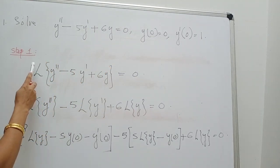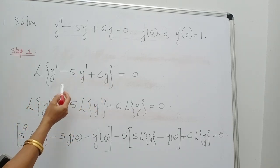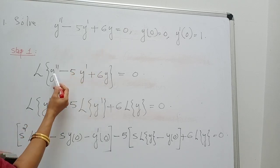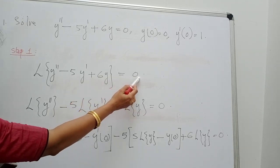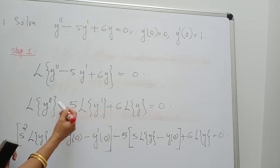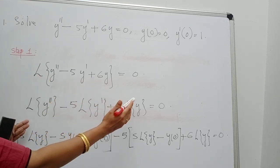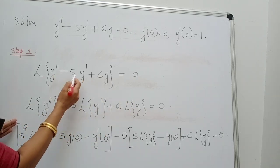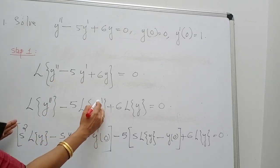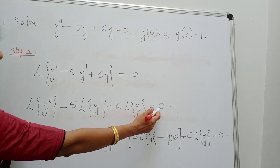By step 1, take Laplace transform on both sides. Therefore, taking the Laplace transform: L{y'' − 5y' + 6y} = L{0}. By the linearity property of Laplace transform, you can apply L to each term: L{y''} − 5·L{y'} + 6·L{y} = L{0}.